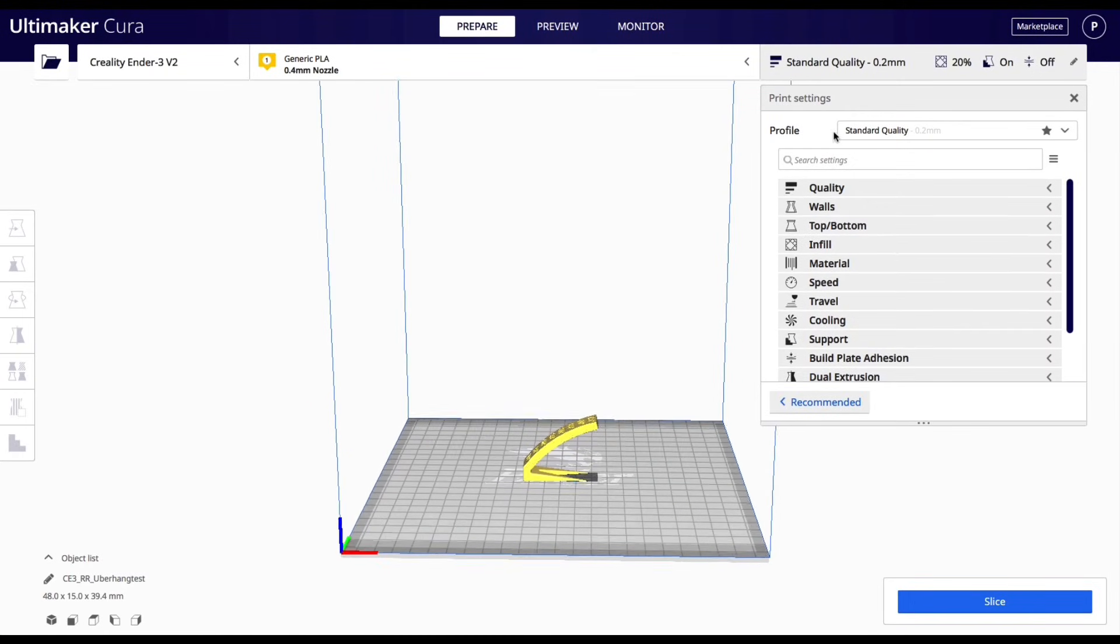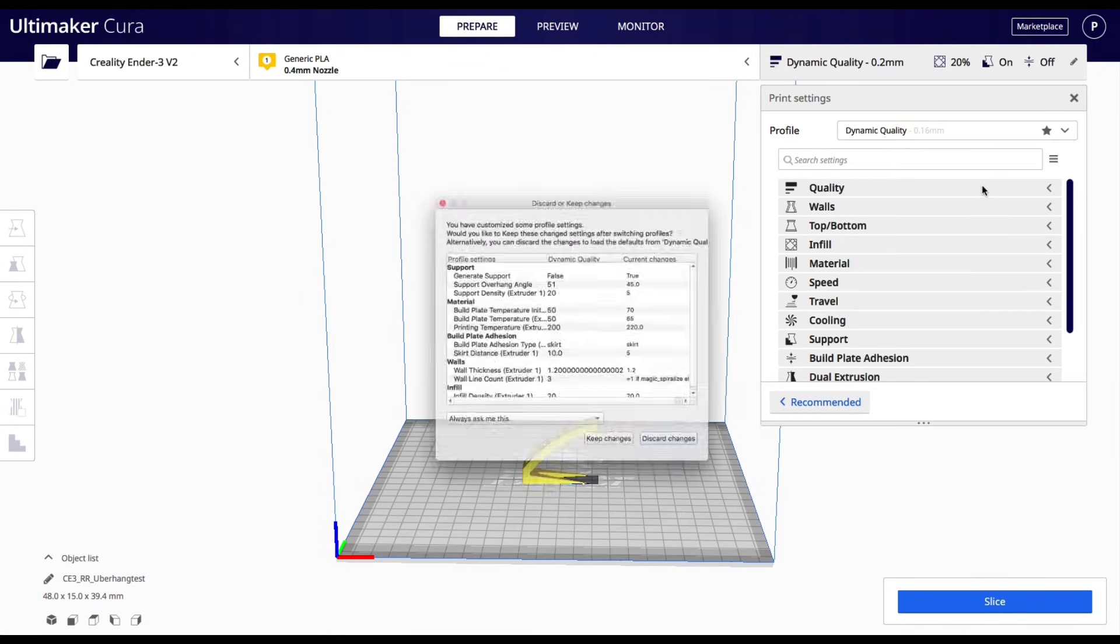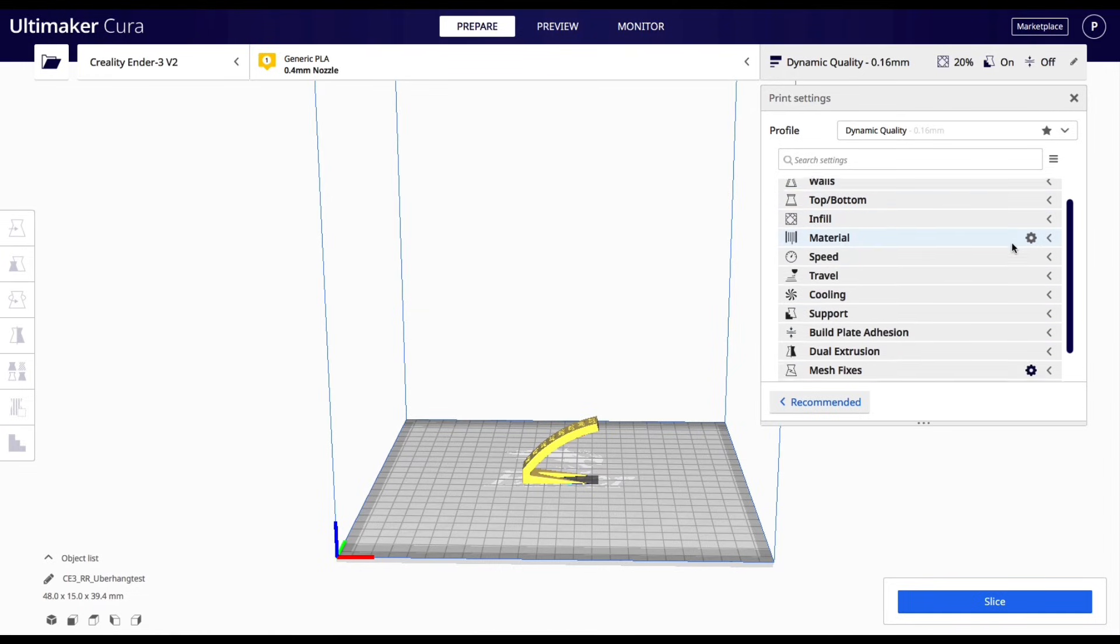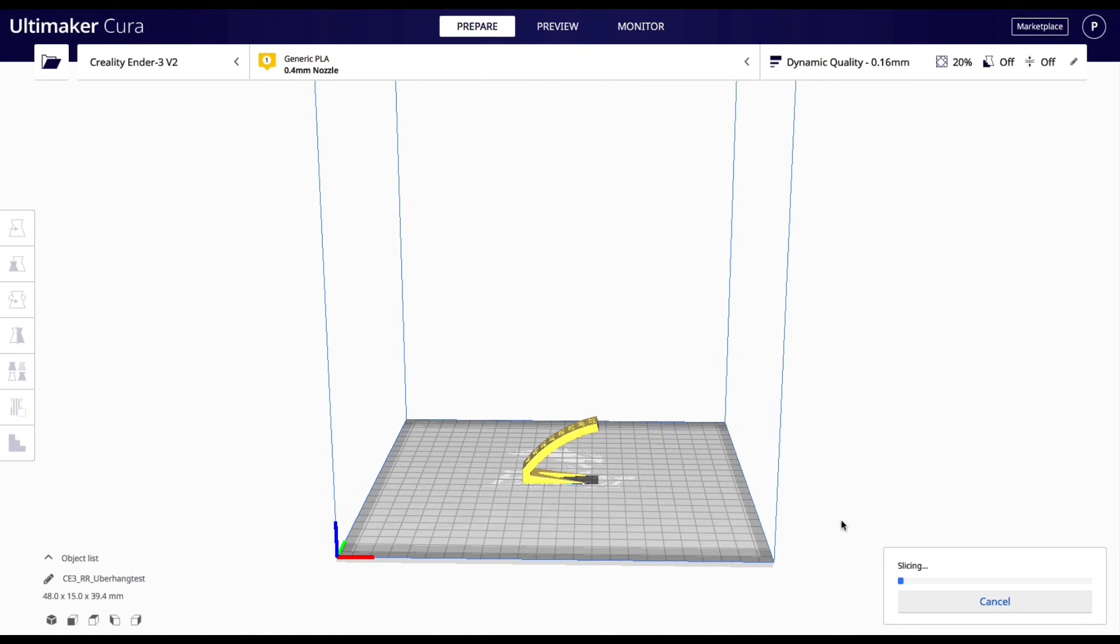For print four, we are going to change from standard quality to dynamic quality. So from 0.2 millimeters to 0.16 millimeters. We're going to keep the walls the same. So 1.2 millimeter wall thickness. We're going to change our build plate, which I already did from raft to skirt and slice it up here. One hour, 15 minutes. So it does increase that time, but I think we might get some pretty good results. Let's print it.